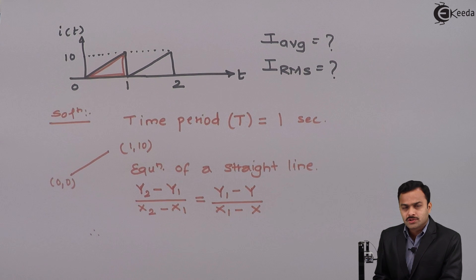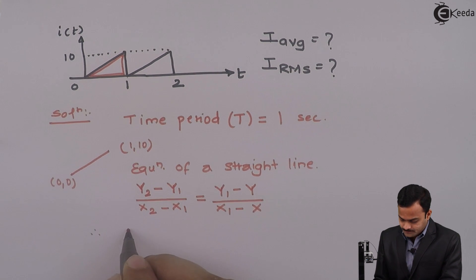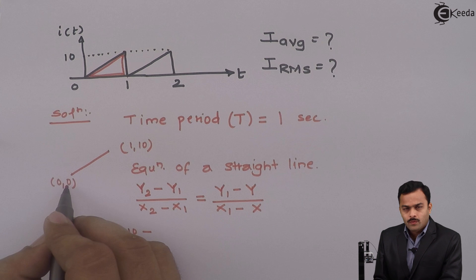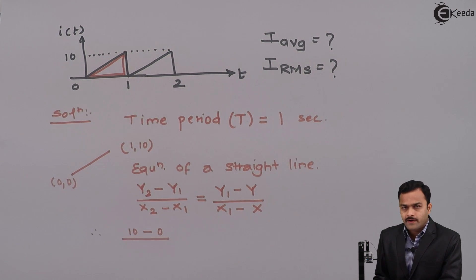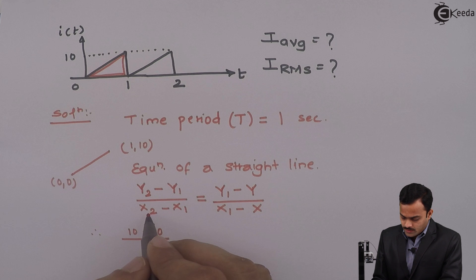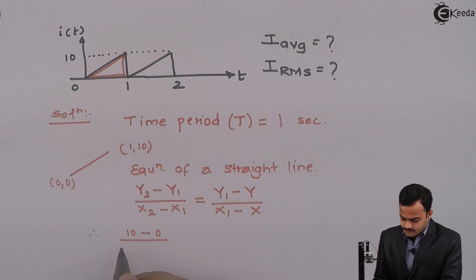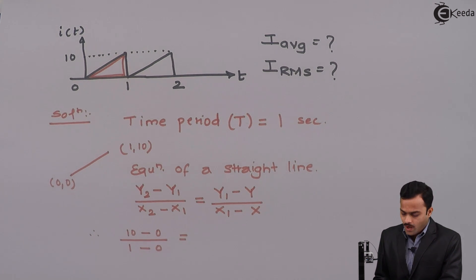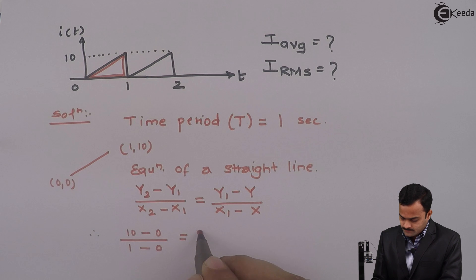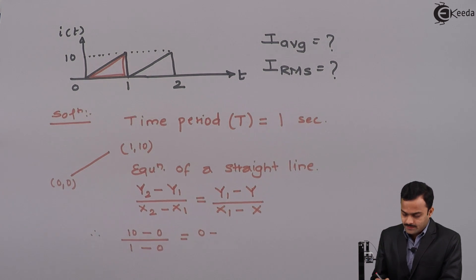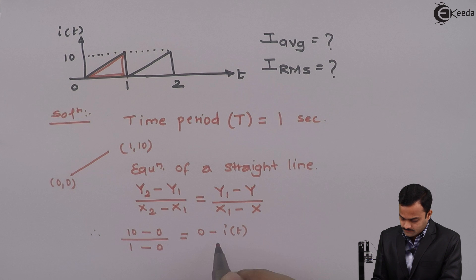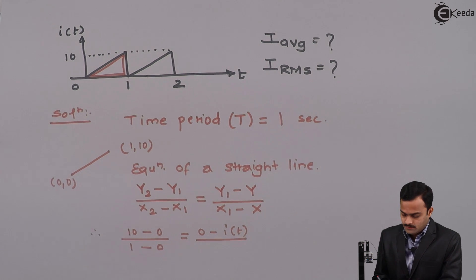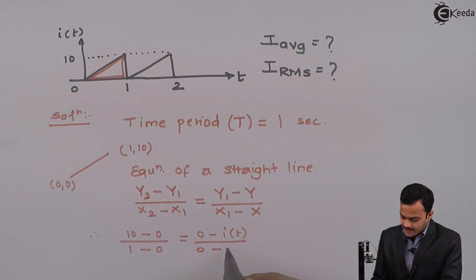If I substitute, what I will get? y2 is 10, y1 is 0, divided by x2 is 1, x1 is 0, equal to y1 is 0 minus y which is i(t), upon x1 is 0 minus x which is time axis t.